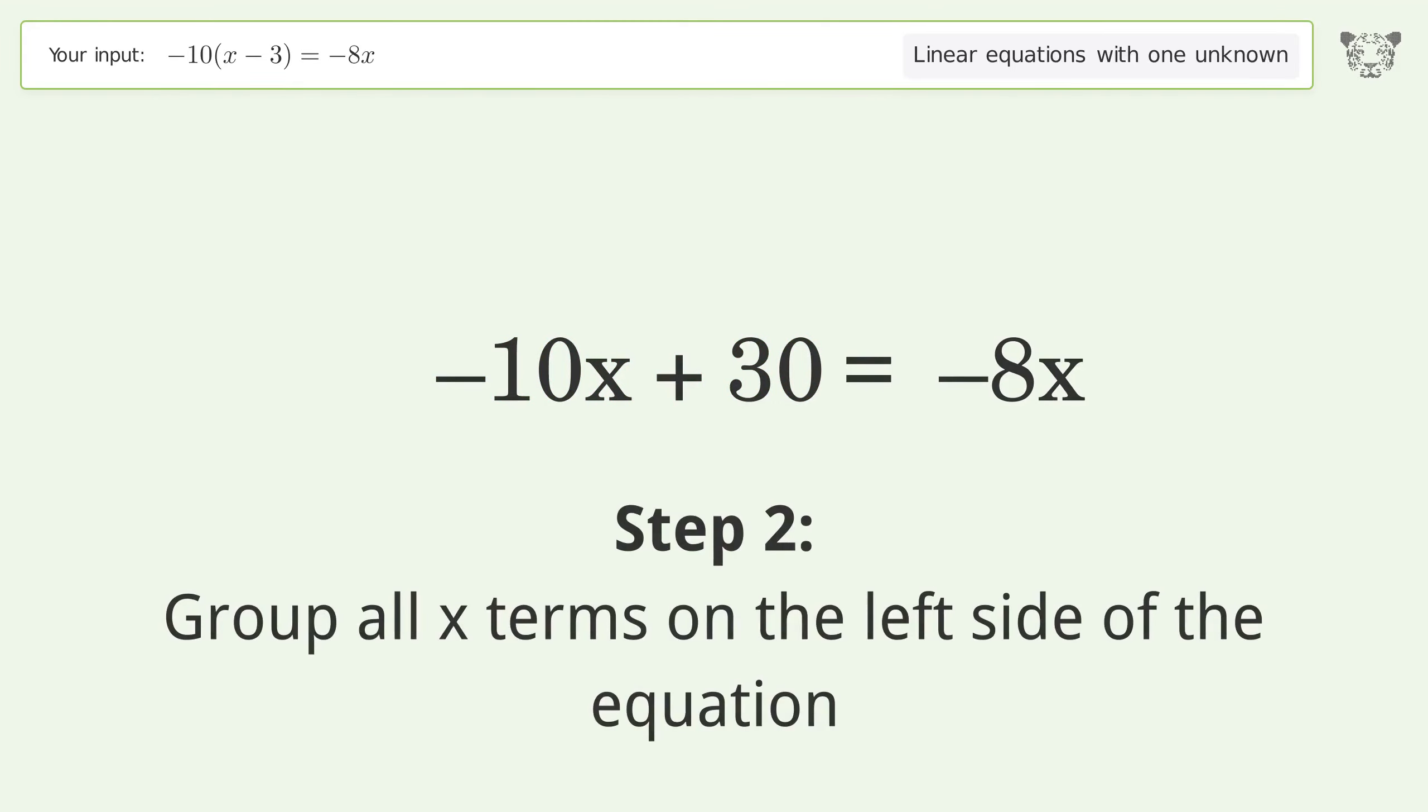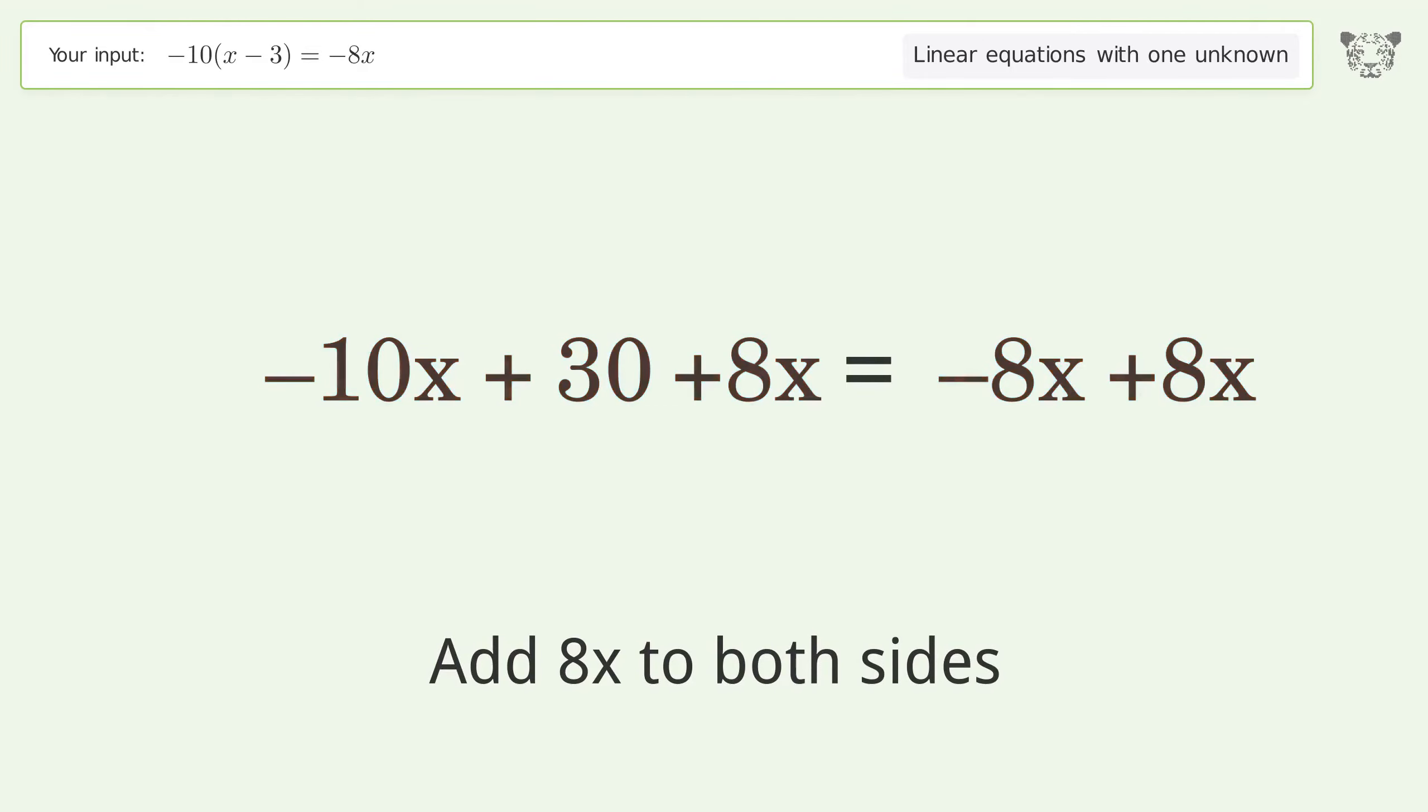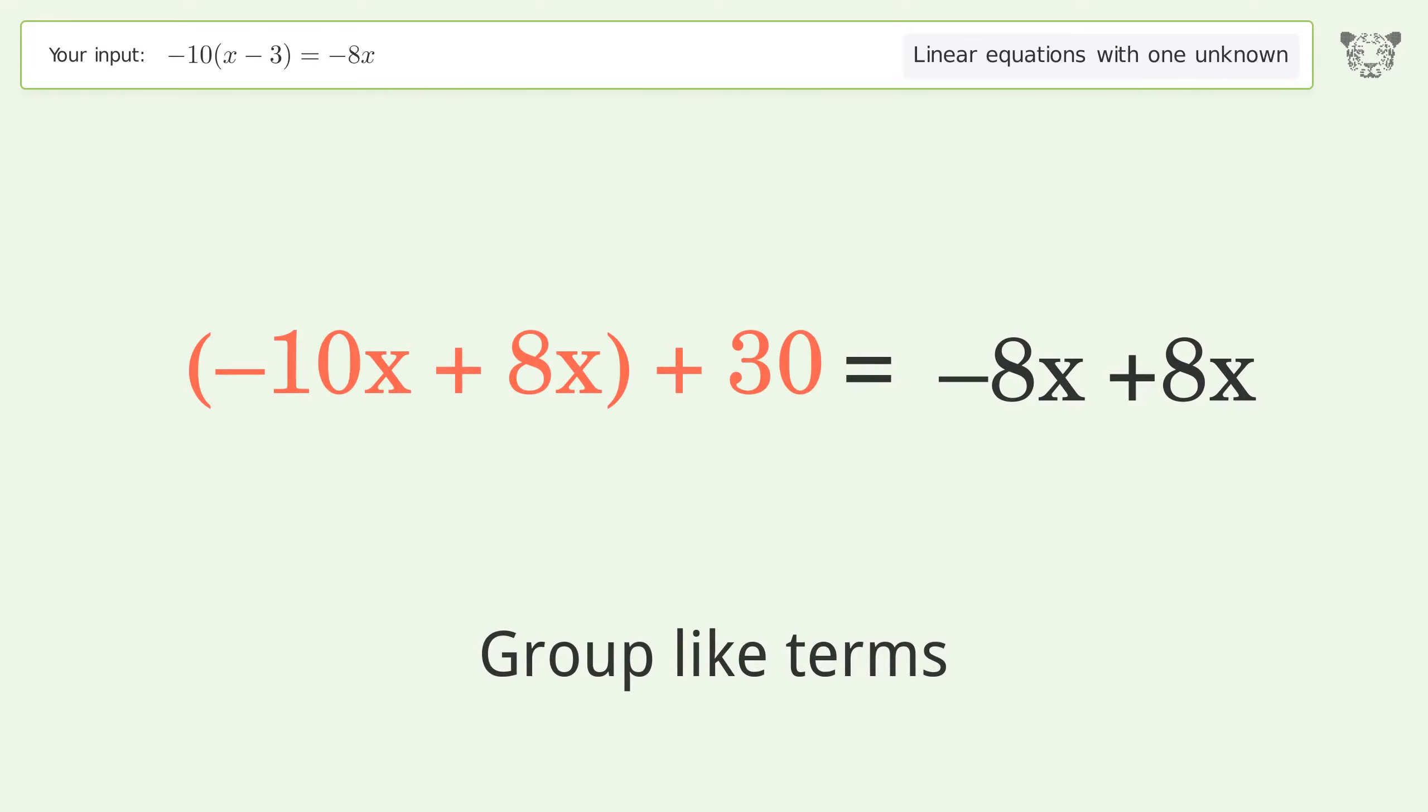Group all x terms on the left side of the equation by adding 8x to both sides. Group like terms and simplify the arithmetic.